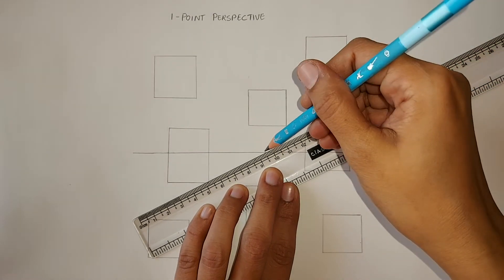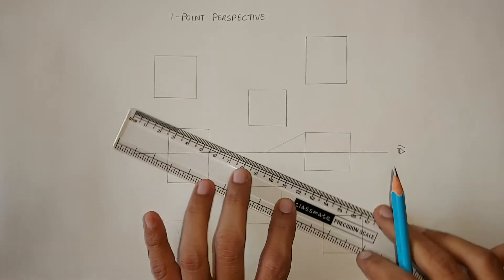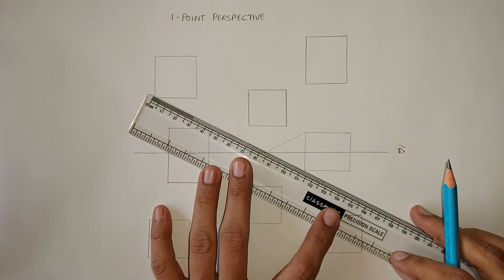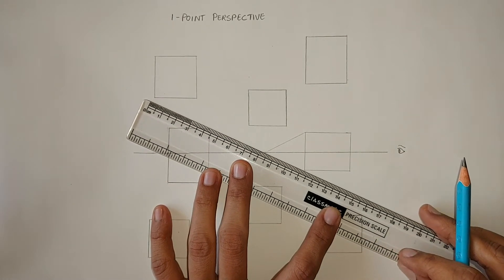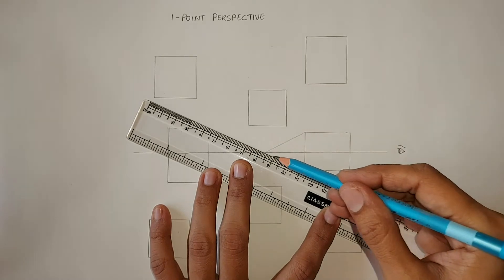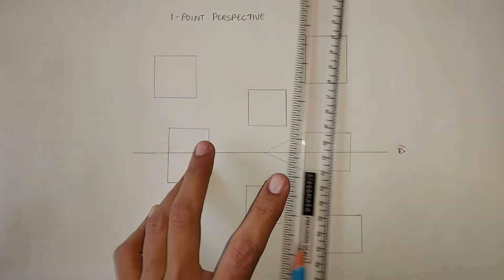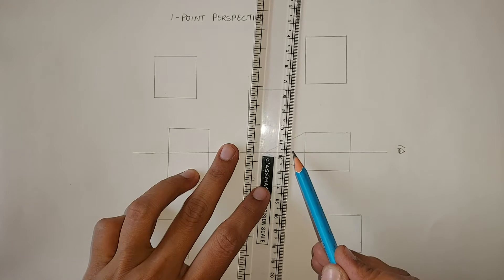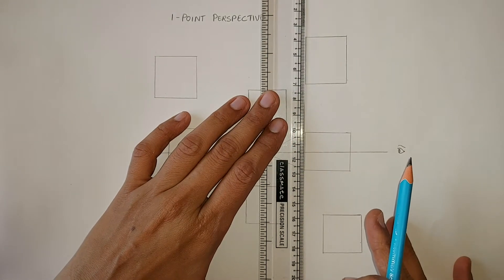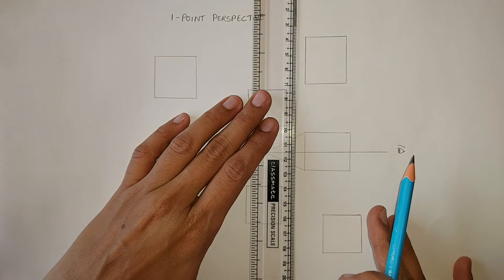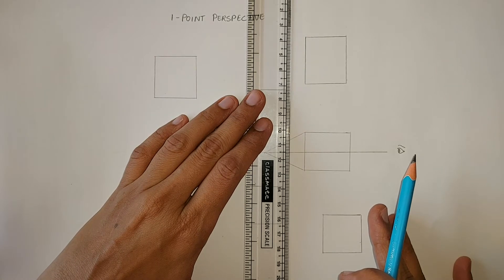You may see two of them are on the horizon line. Take the ruler parallel to this side and draw a line which will show the depth of the cube.